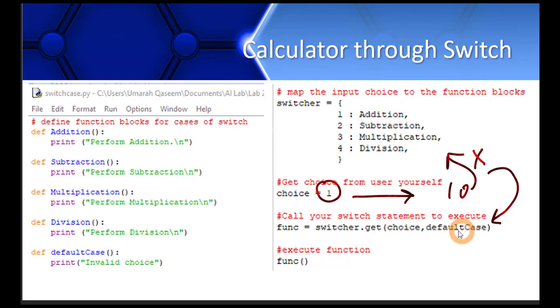So whatever the choice is, the corresponding value in this dictionary will be passed. In our case right now, the choice is one and the value is addition. So addition will be passed to this variable func. So now it has addition in it. Then we can simply execute the function by writing round brackets here. You can see how simple and easy that is.